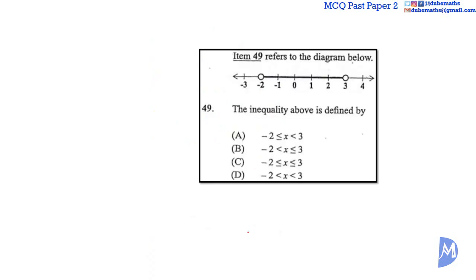Question 49. This inequality takes values from negative 2 to 3. The circles at negative 2 and 3 are not shaded. So negative 2 and 3 are not part of the solution set. The answer is X is greater than negative 2, but less than 3. The answer is D.